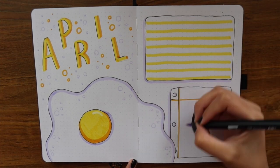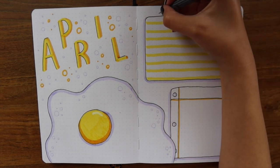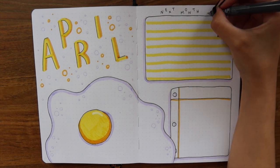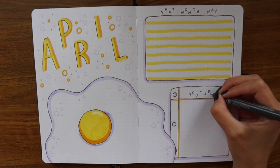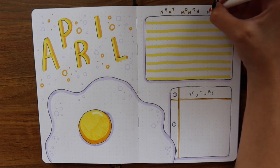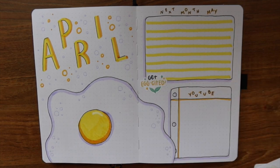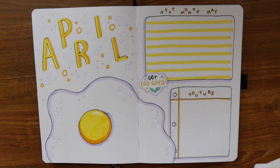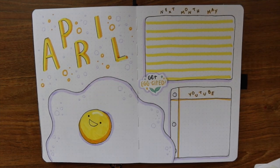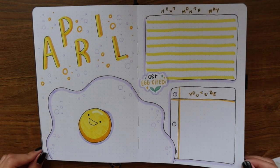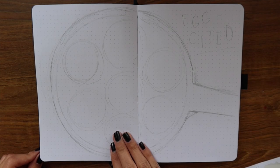I put a giant egg there so everyone knows that's going to be the theme of April. Then I wrote April in this really cool different font. I don't think I've ever used this font before, so it was kind of cool creating it. Of course, I left a section for the next month, so things that are due in May I can write down there, and a section where I can write down all of my YouTube video ideas.